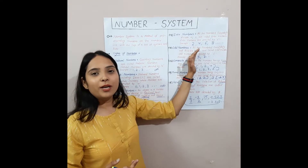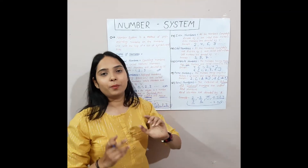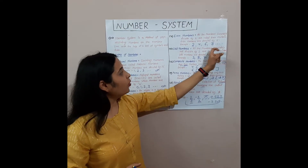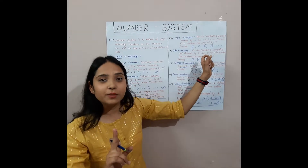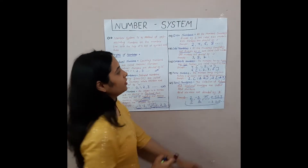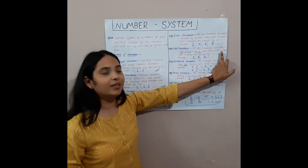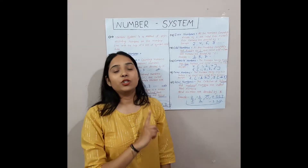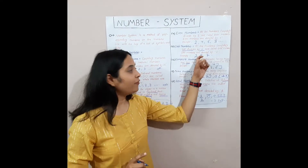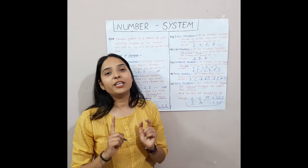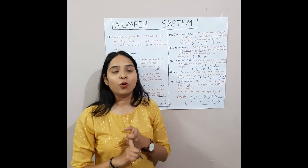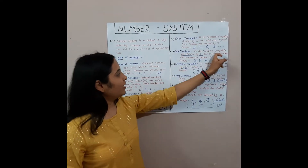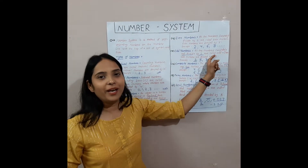Next is the odd number. Odd number is the opposite of even number, because in odd numbers, all the numbers are not completely divisible by 2. These are called odd numbers. For example: 3 is not divisible by 2, 5 is not totally divisible by 2, 7 is not completely divisible by 2. So odd numbers are numbers not completely divisible by 2.